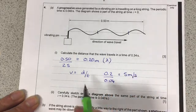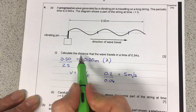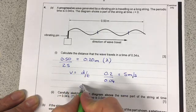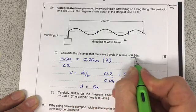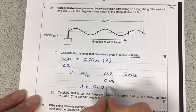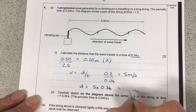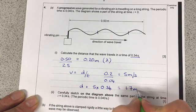And then I can do distance equals speed times time, so I can do distance equals 5 times this one from within the question, that's the time the wave's being given to travel, and that's going to give me 1.7 metres.